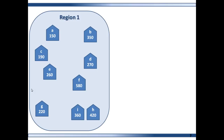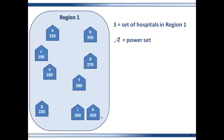Say you have a region like upstate New York, Southern California, or the Georgia swamp. Let's call it Region 1, and say you have these hospitals in Region 1. Region 1 is like what we've been calling Set S, the original domain, and each of the hospitals is an element in this set. Then you create a sigma algebra so that you can examine functions of groups or elements of Set S. Let's make the sigma algebra the power set of Region 1, which is every possible set from every possible combination of elements in Set S — in this case, 2 to the 9, or 512 elements.